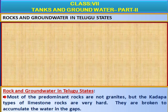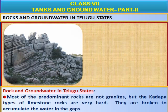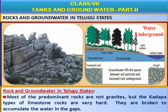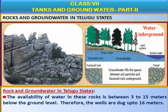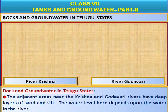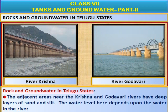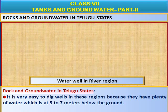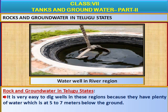Most of the predominant rocks are not granites, but kadapa types of limestone rocks, which are very hard and broken to accumulate water in the gaps. Availability of water in these rocks is between 3 to 15 meters below ground level, so wells are dug up to 16 meters. The adjacent areas near the Krishna and Godavari rivers have deep layers of sand and silt. The water level here depends on the rivers, and it is easy to dig wells as plenty of water is found at 5 to 7 meters below ground level.